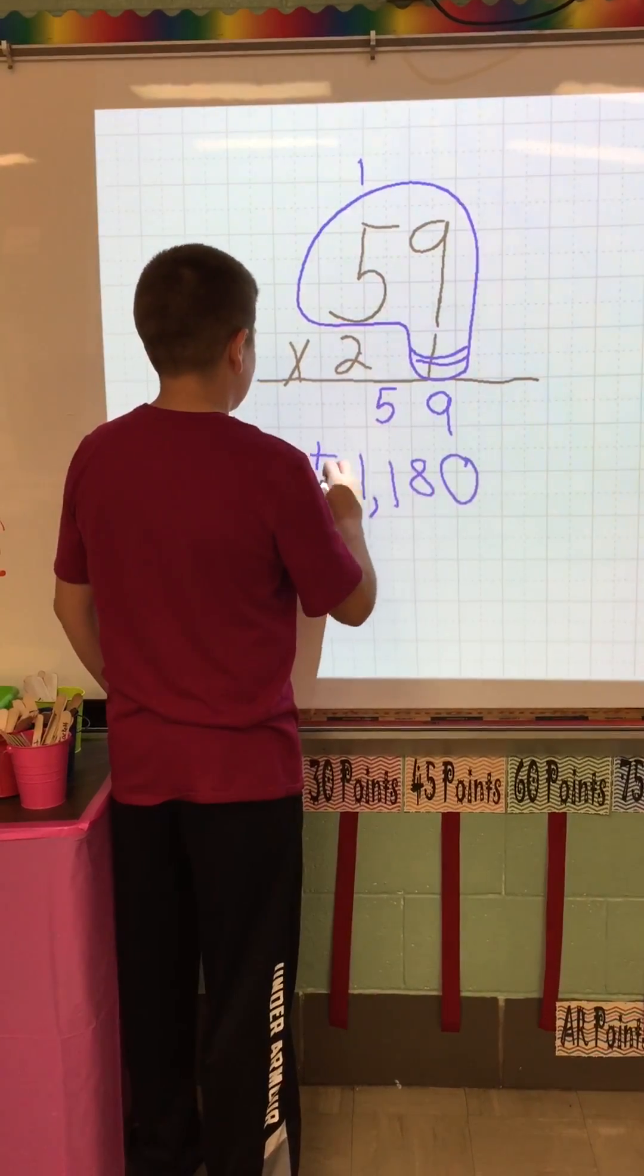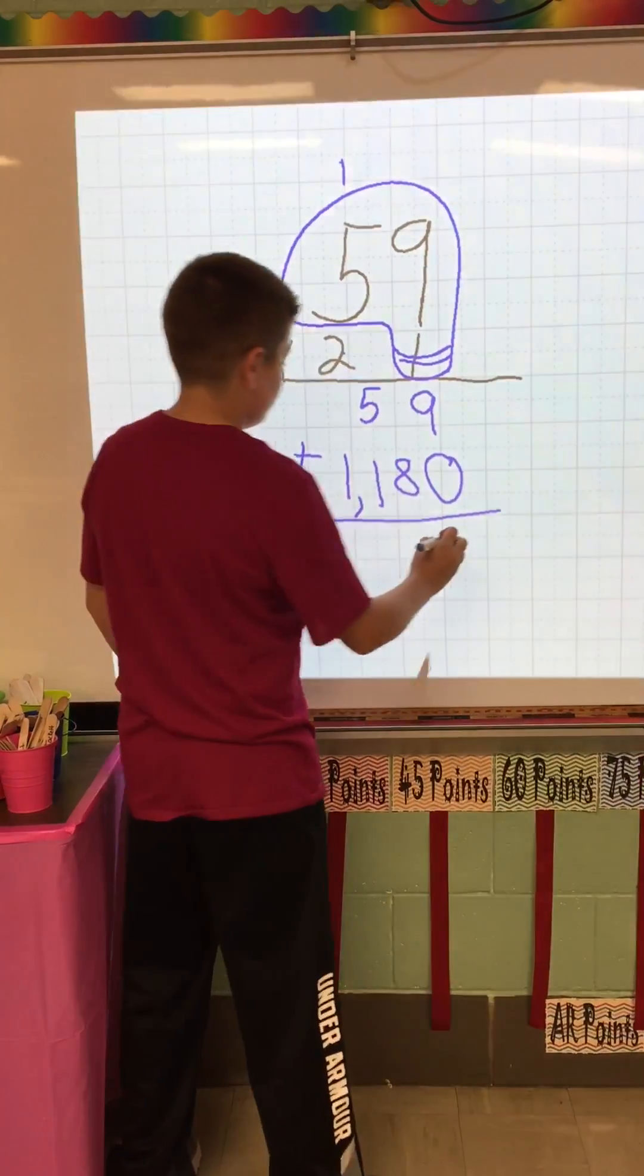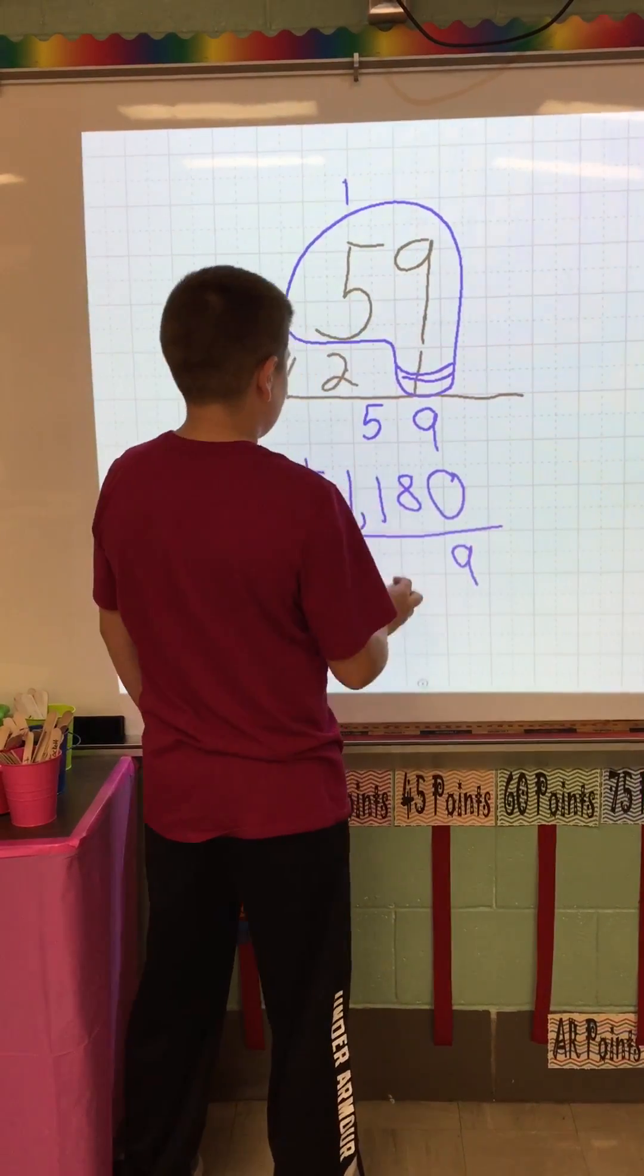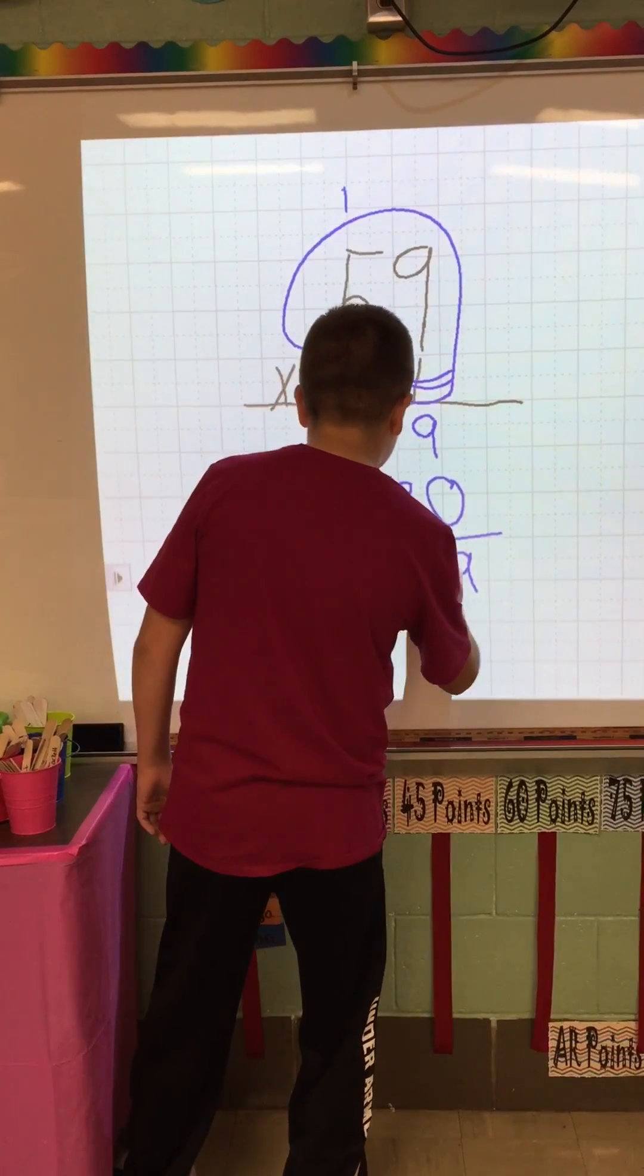So you would plus these, and that would equal to, that would be 9. 5 plus 8 is 13.